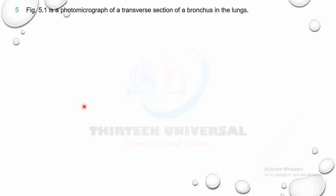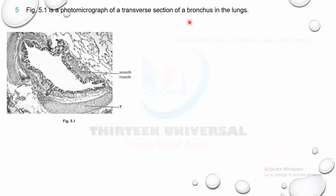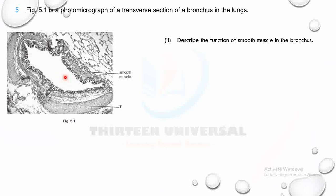Yes, tissue T is cartilage. The question asks: describe the function of smooth muscle in the bronchus. Smooth muscle contracts, causing the airway to become constricted — less volume of air moves towards the alveoli. When it relaxes, the lumen or diameter of the airway becomes dilated and more volume of air flows in or out.